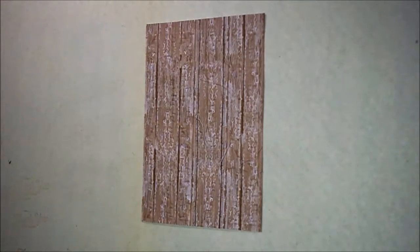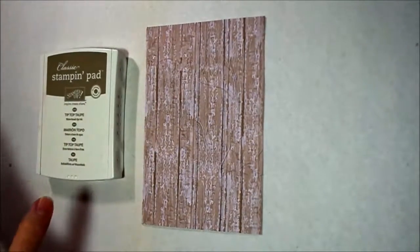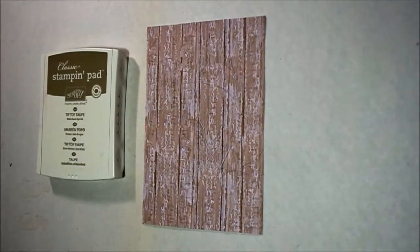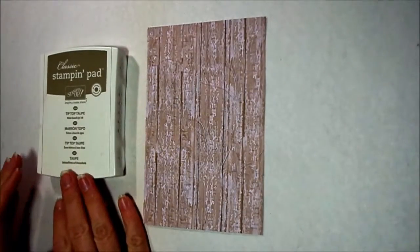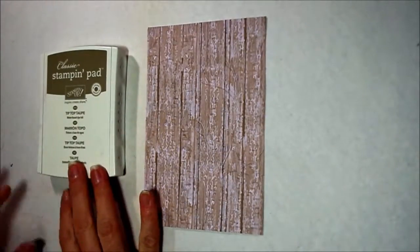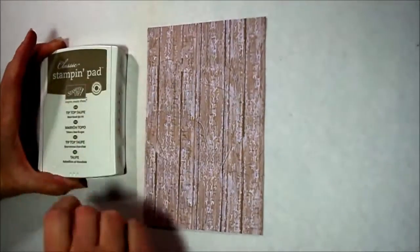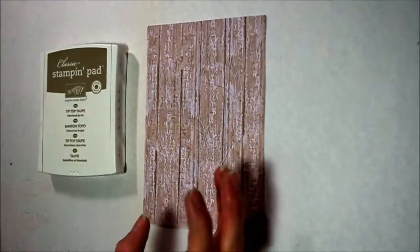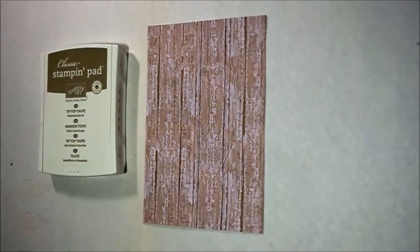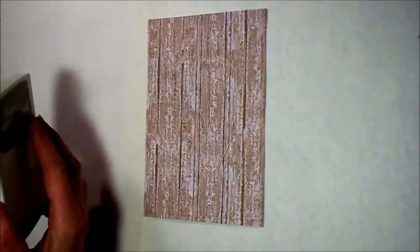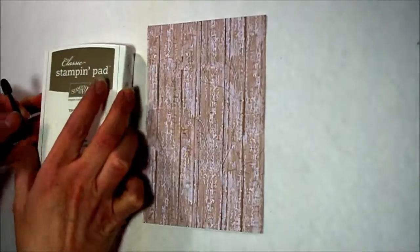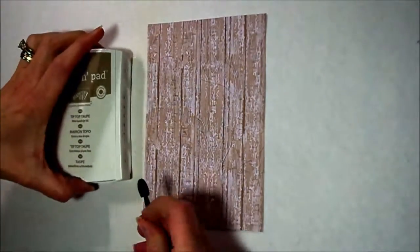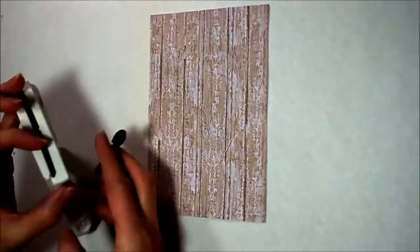And now I'm going to take the Tip Top Taupe ink. It is a retiring color in May, the end of May 2017. But you could use just about anything brown. A lighter brown probably would be better, but anything brown that's going to darken the tree trunks.